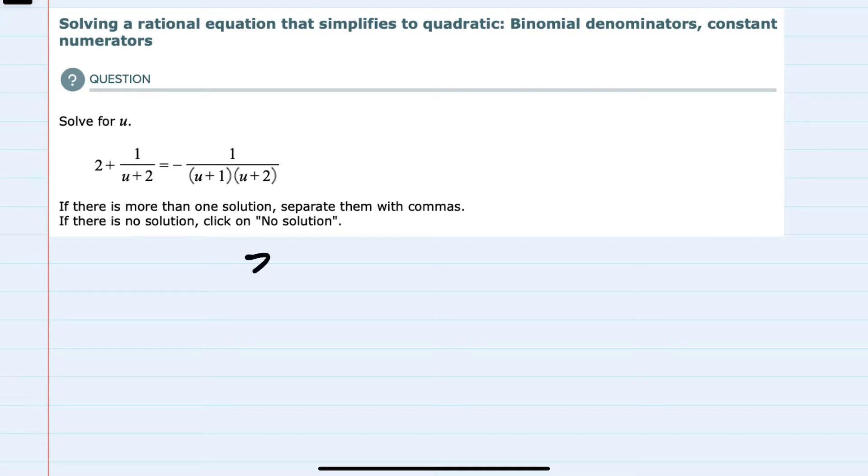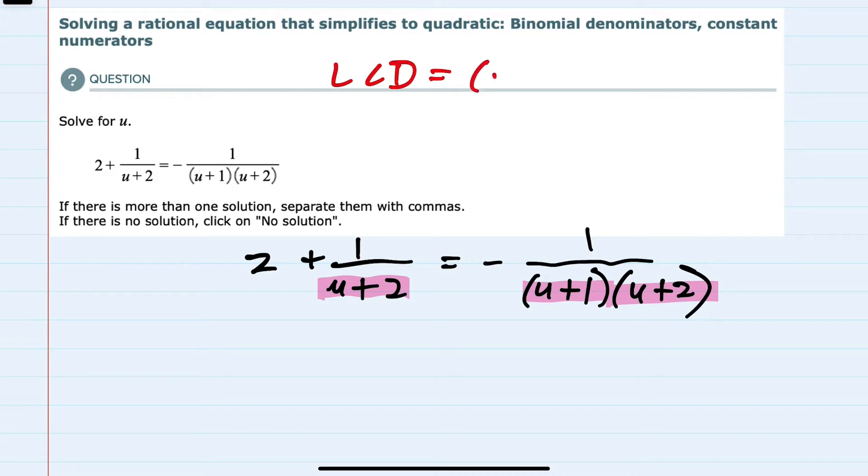We're asked to solve for u, and the first step is going to be to eliminate these fractions by multiplying by the lowest common denominator. We have two denominators, u plus 2, but then the second denominator has a u plus 1 and a u plus 2, so the lowest common denominator is going to be u plus 1 times u plus 2.